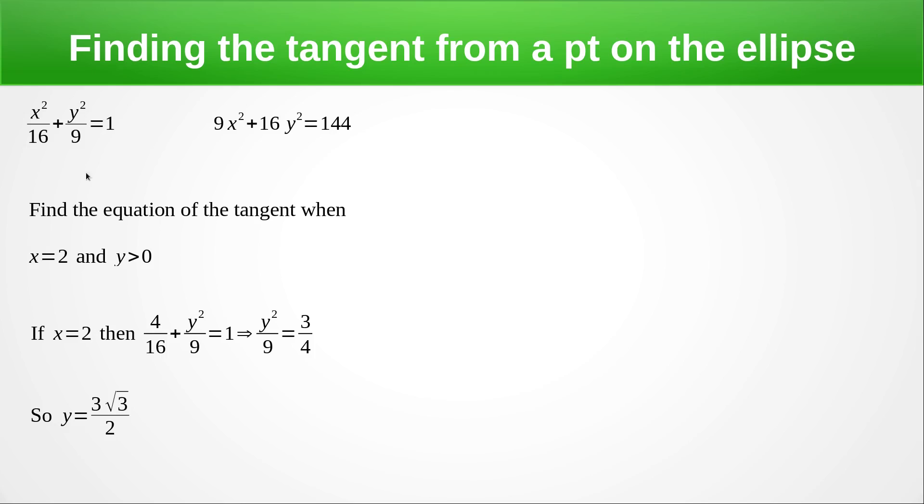So here we've multiplied everything by 144 to give 9x² + 16y² = 144. If we differentiate this implicitly, now remember what happens, we're differentiating with respect to x. So this becomes 18x.